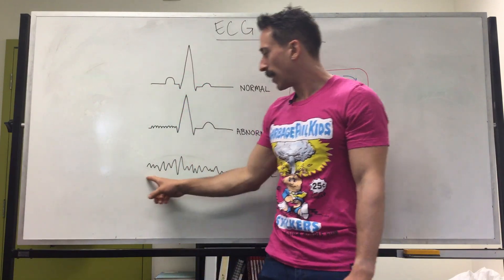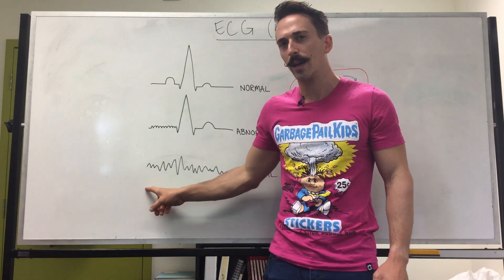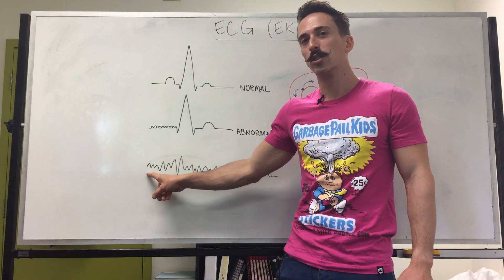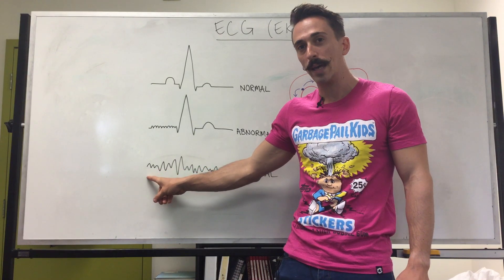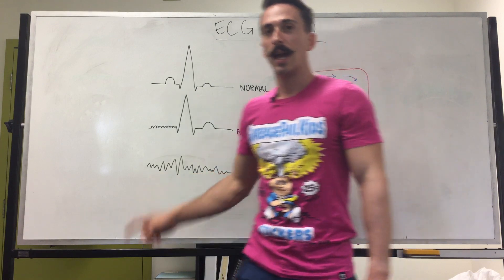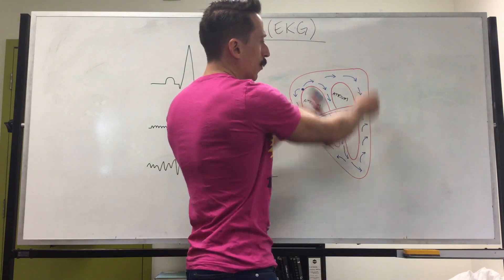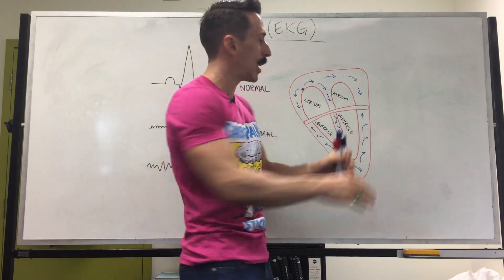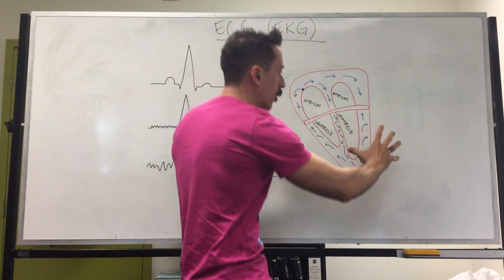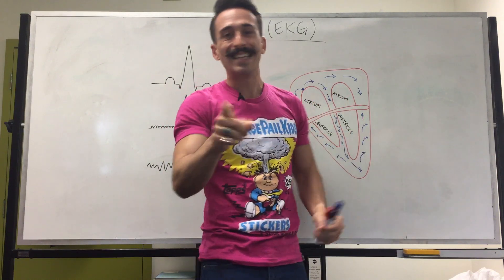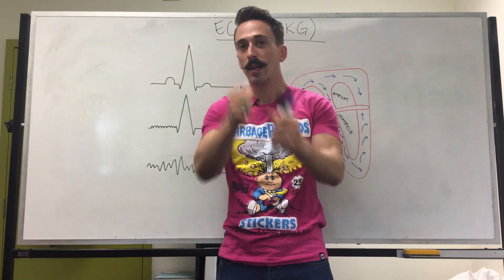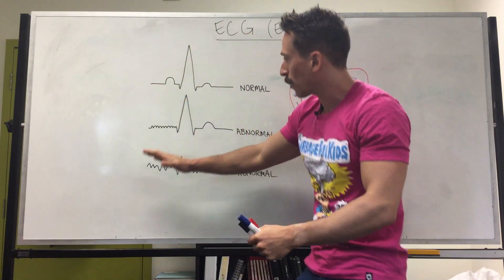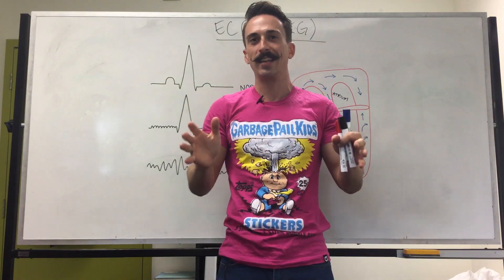Now if you get an ECG readout that looks like this, you'll likely not be conscious to have a look at it. This is showing that the electrical activity of the whole heart is not firing in a nice patterned way. This is called ventricular fibrillation — the electrical activity is going everywhere, and the whole heart starts to contract like a bag of worms. That means no blood actually leaves the heart because there's no nice strong contraction of the ventricles. This is where you pull out the defibrillator — those paddles — and put a strong current through the individual to reset the electrical activity of the heart. That's an ECG.